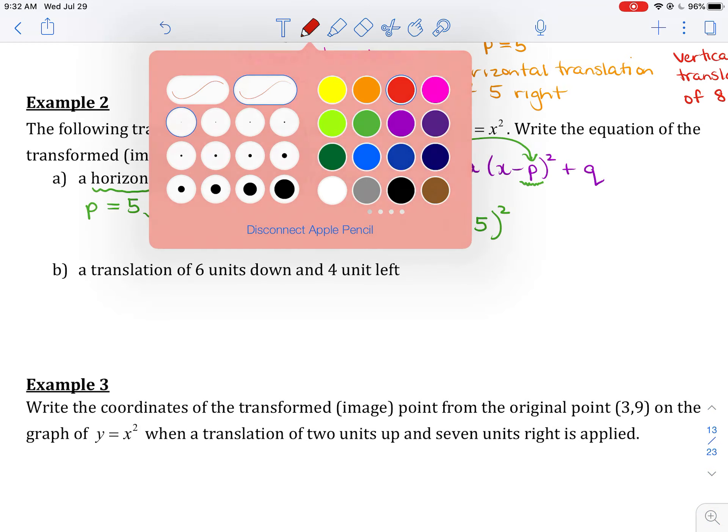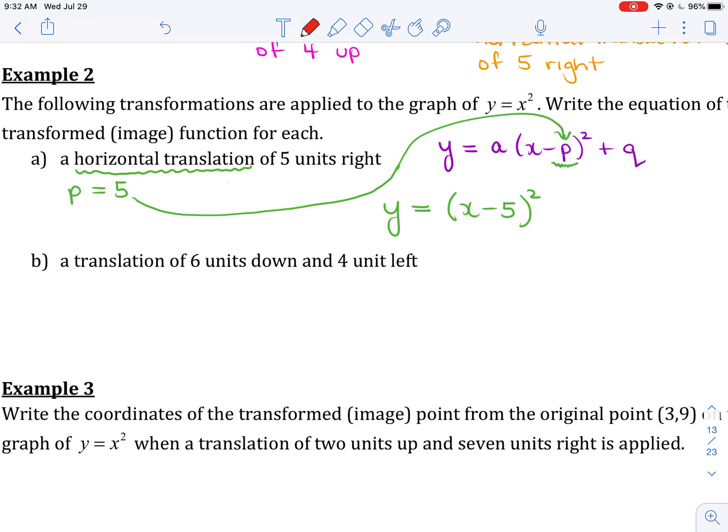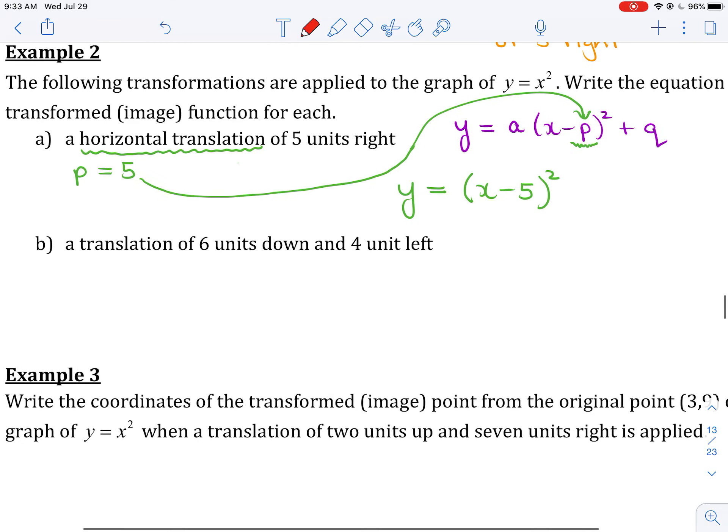Looking at B, this time we want a translation of 6 units down and 4 units left. So I'm going to expand upon that a little bit more. A translation of 6 units down—really they should have told us that we wanted a vertical translation of 6 down. And then they should have told us that we wanted a horizontal translation of 4 units to the left.